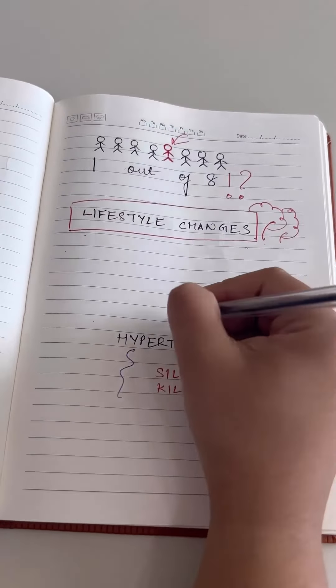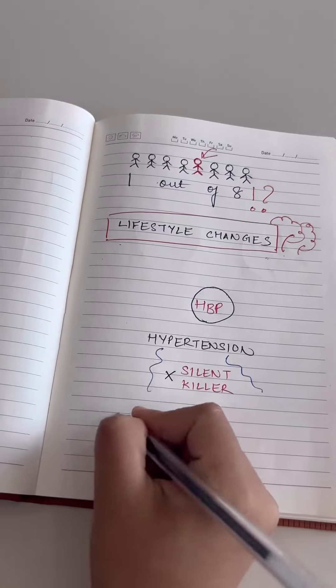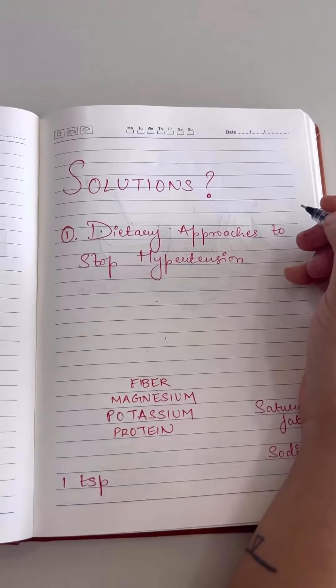High blood pressure usually doesn't have any symptoms and so it's called the silent killer and is linked with cardiovascular diseases and kidney disorders. What are some of the best solutions to control hypertension?